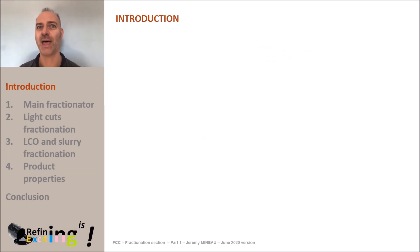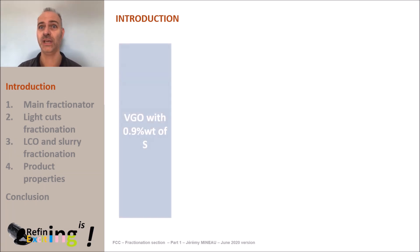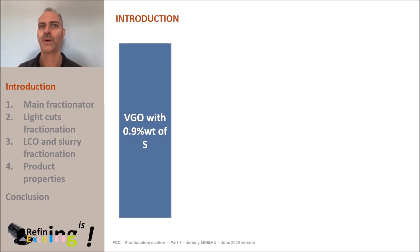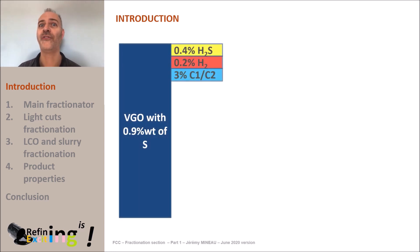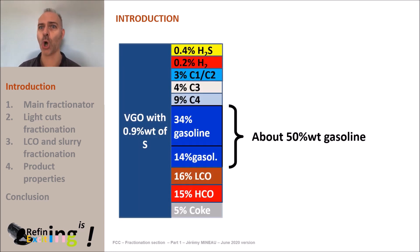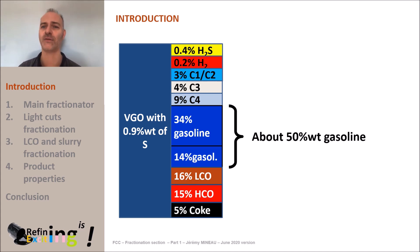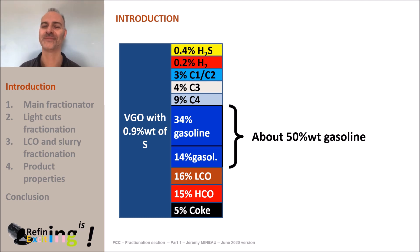As a reminder, here are the typical reactor yields. About 5 weight percent of the feed is transformed into coke and deposited on the surface of the catalyst in the reactor. This coke is then burned in the regenerator.